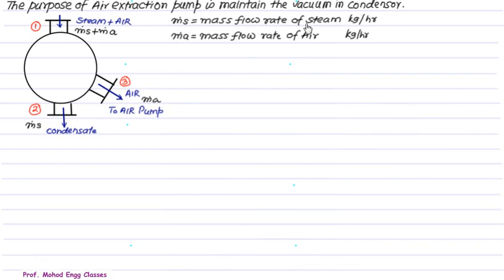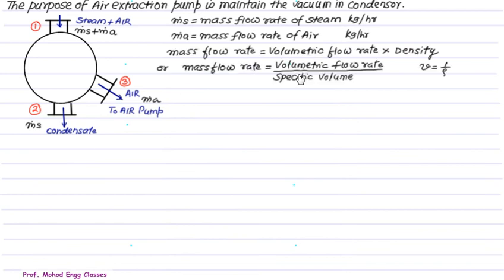M dot s represents the mass flow rate of steam in kg per hour. M dot a is the mass flow rate of air in kg per hour. We know that the mass flow rate is equal to volumetric flow rate multiplied by density, and density is basically reciprocal of specific volume. So we can write mass flow rate equal to volumetric flow rate upon specific volume, or volumetric flow rate is the mass flow rate multiplied by specific volume. Volumetric flow rate is represented by V bar dot.